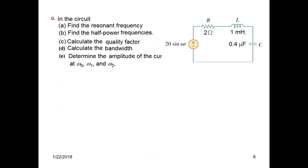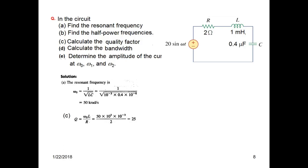In this example, we need to find the resonant frequency, the half-power frequencies, the quality factor, the bandwidth, and the amplitude of the current at omega 0, omega 1, and omega 2. Since this is a simple series circuit, we use the formula omega 0 equals 1 over root LC, giving a resonant frequency of 50 kilo-radians per second. Then we find Q using the formula; Q equals 25, which is high-Q since it is greater than 10.